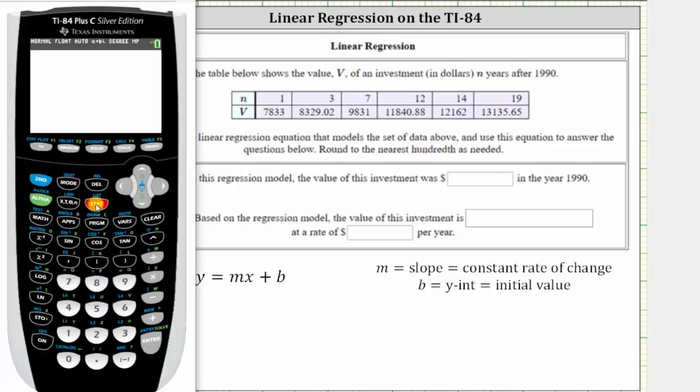To do this we press STAT and then ENTER. We will enter the n values in the first column and the v values in the second column. Notice how there is some old data in L1. To clear this quickly we go up to the top of the column, press CLEAR and then ENTER.